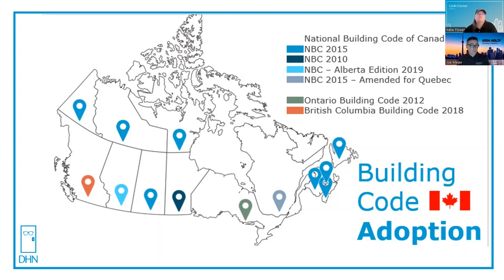For those of you that aren't familiar with that, what that means is whereas a code like the IBC has some prescriptive elements to it — as long as you do X, Y, and Z, you're good — in an objectives-based code, it's more about what we're trying to accomplish. Here's the objective, here's what we're trying to do, and it's up to you to provide a solution that meets the objective. In theory, an objectives-based code is meant to foster innovation and provide room for alternative solutions.